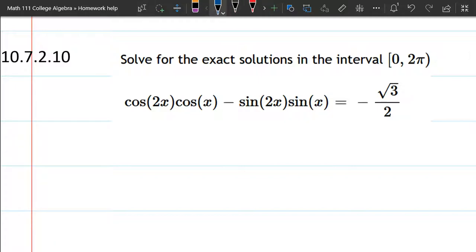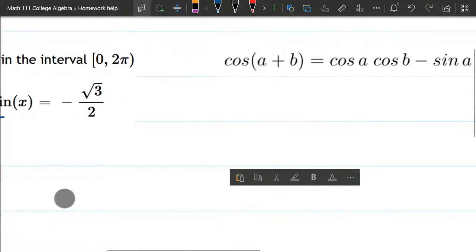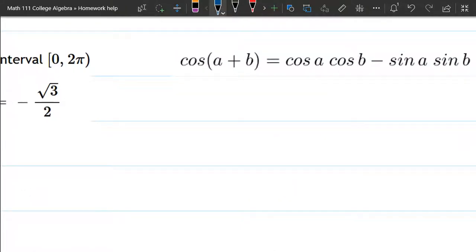What I noticed when I saw this is it went cos, cos, sine, sine, and there was a minus in between. So I looked at the formula page, and look at that, we have one that goes cos, cos, sine, sine, and there's a minus in between. So we're going to use this formula.